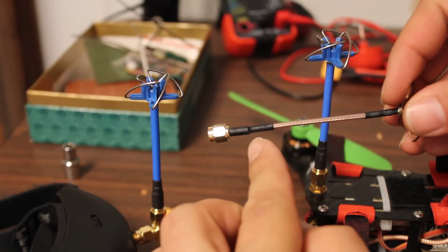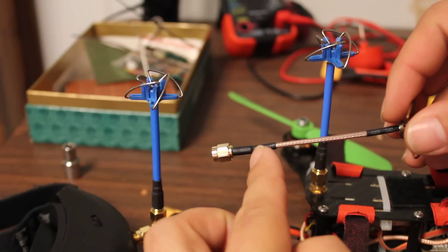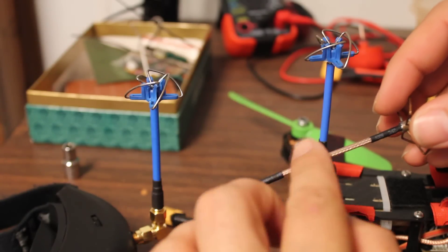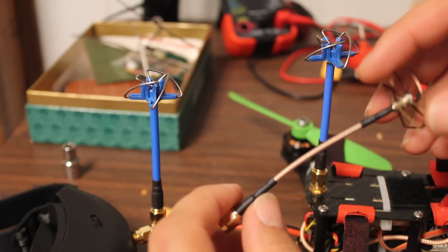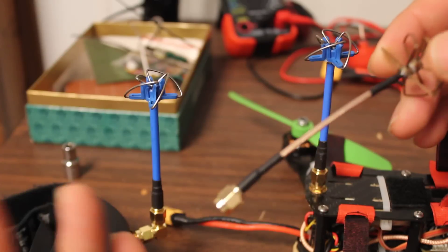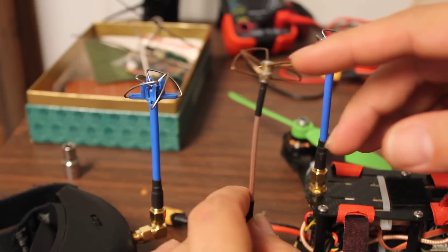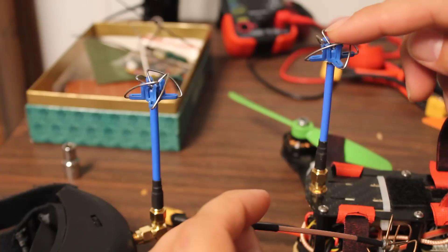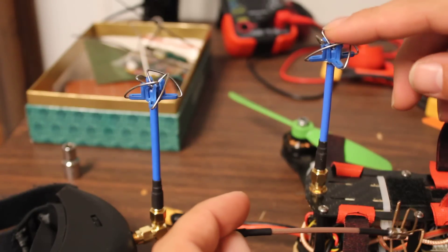Sometimes it breaks right here at the base, just the metal cuts into the coax and cuts it. Sometimes it just wears out wherever it's been bending from the copter falling on it and stuff. So I thought I would give these a try. They are far more robust.